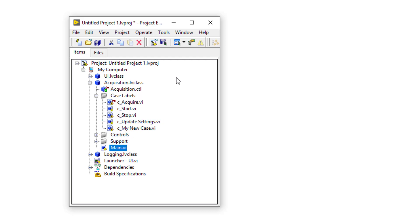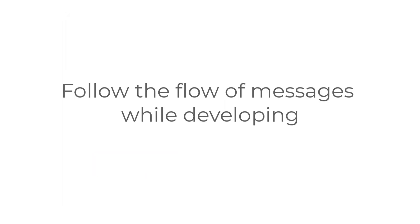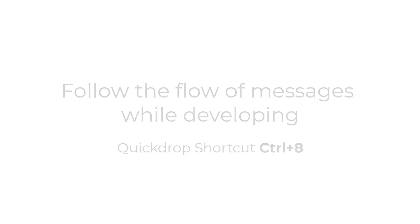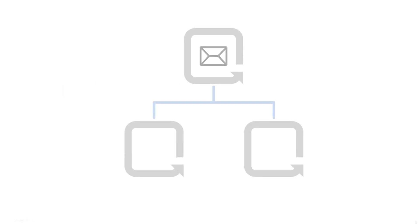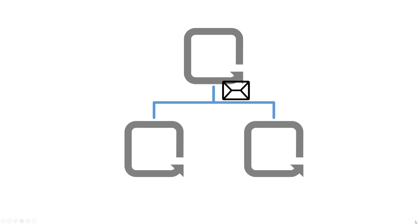So that's how you can quickly create case labels for all of your message handling loop cases in your workers. Another feature that case labels provide you with is the ability to use them to jump from a message's NQ point to its DQ point, to help you save time following the flow of messages around your code while you develop.